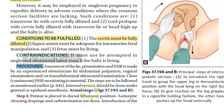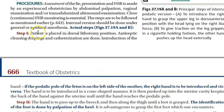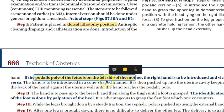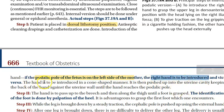For the procedure, you will do continuous fetal monitoring. Step one: place the patient in the dorsal lithotomy position — this is standard — with antiseptic draping. You will then introduce the hand. If the podalic pole of the fetus is on the left side of the mother, you will use your right hand, and vice versa. The hand should be introduced in a cone-shaped manner — make your hand like a cone and go inside.